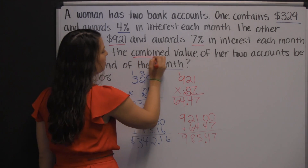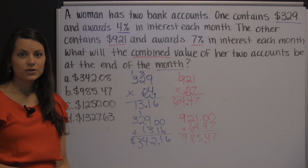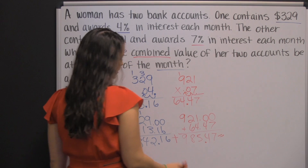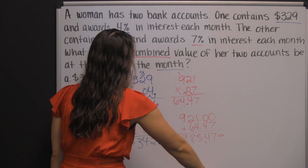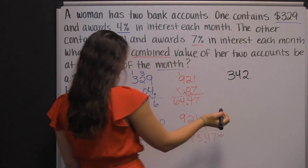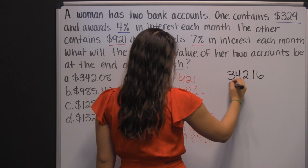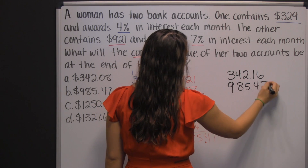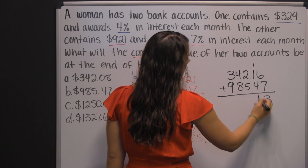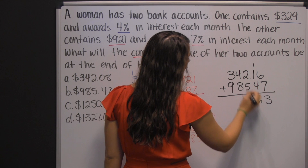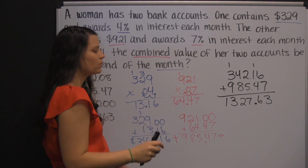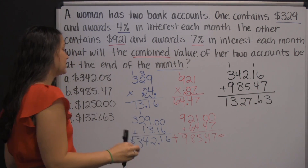They did ask what will the combined value be, so the last thing we have to do is add those two totals together. $342.16 and $985.47. 6 plus 7 is 13, carry 1, that's 6. Bring down your decimal. 2 plus 5 is 7. 4 plus 8 is 12, carry 1. 9, 10, 13. So $1,327.63.